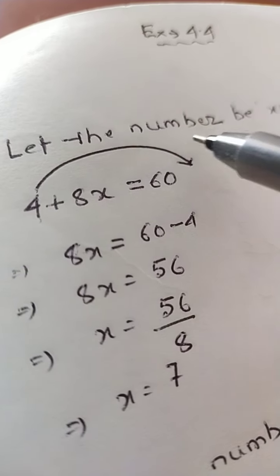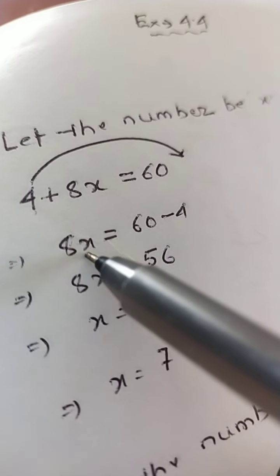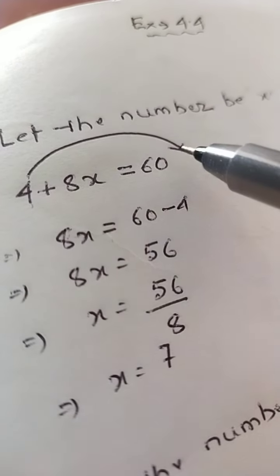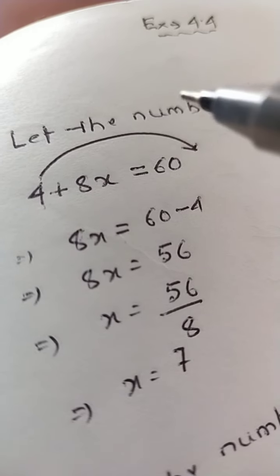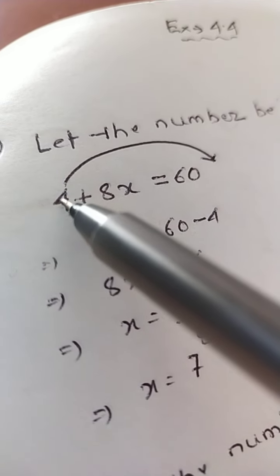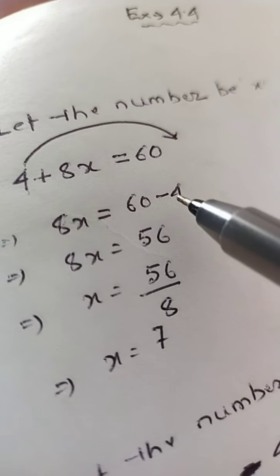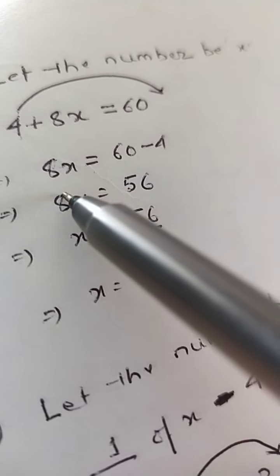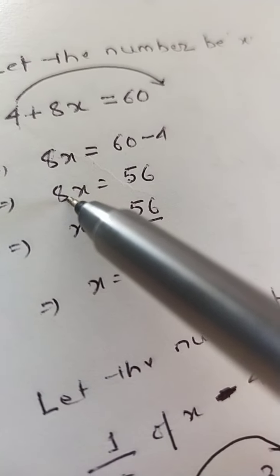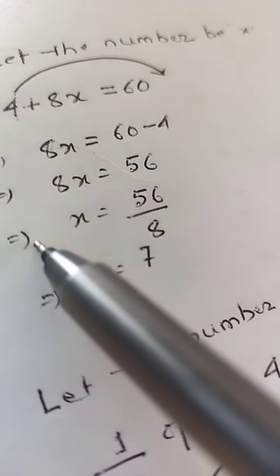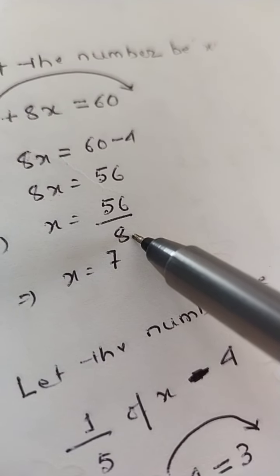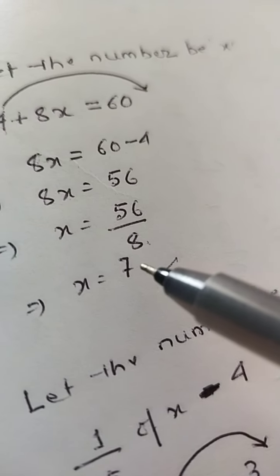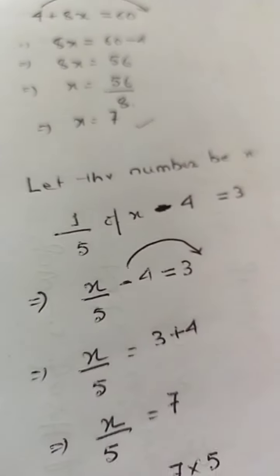To isolate x, take 4 from the left hand side to the right hand side. Remember: when you move a number across the equals sign, it changes sign. So 8x = 60 − 4 = 56. Now divide both sides by 8: x = 56 ÷ 8 = 7. The required unknown number is 7.